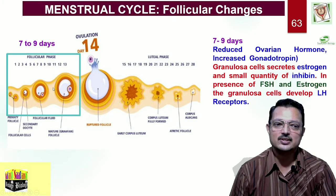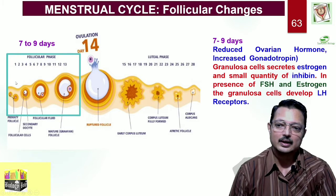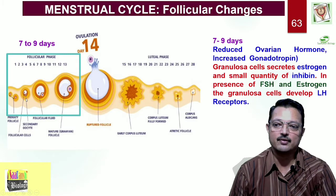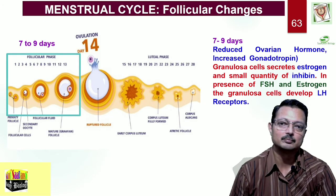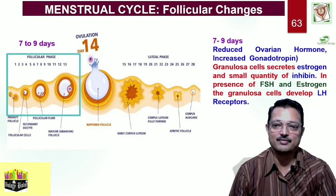In the presence of FSH and estrogen, the granulosa cells develop LH receptors — anticipating ovulation — because LH receptors will catch hold of LH, which will cause ovulation. The period from the 5th or 6th day to the 13th day can be counted as the follicular phase. That marks development of the follicle from primary follicle to secondary follicle, secondary to tertiary follicle. When a secondary follicle converts into a tertiary follicle, a characteristic antrum — a fluid-filled cavity — arises, and then the tertiary follicle develops into a Graafian or matured follicle.